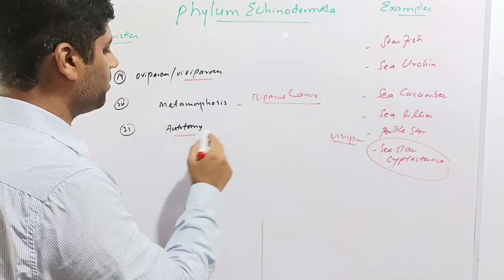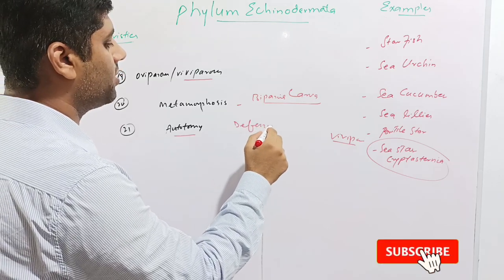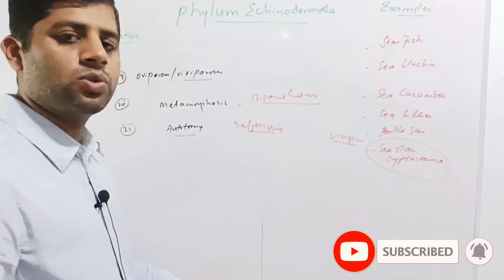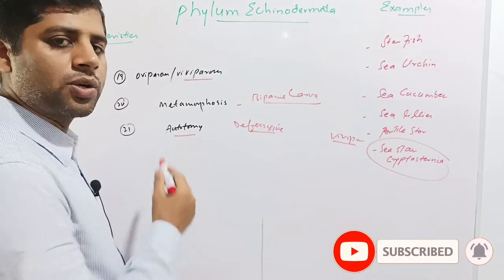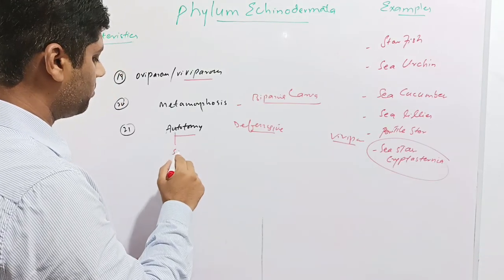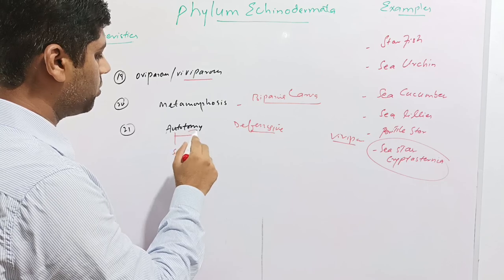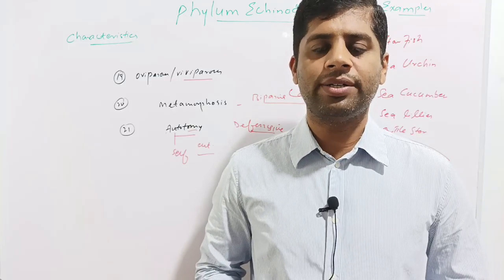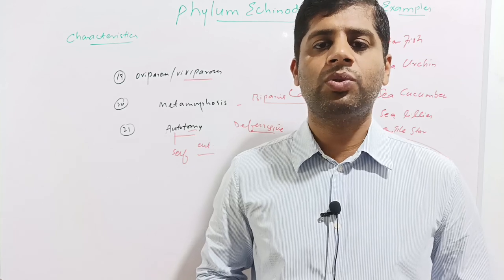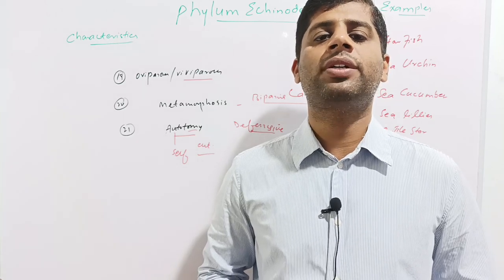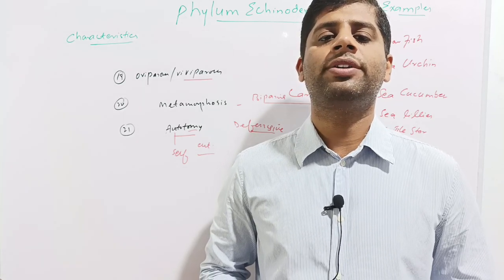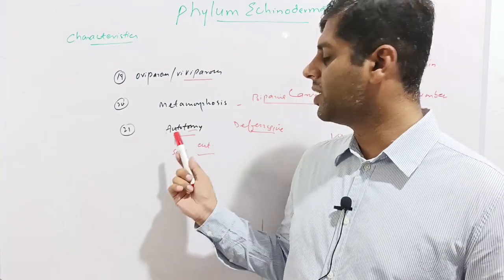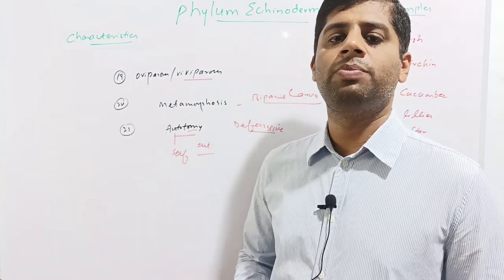Echinoderms also show a defensive behavior called autotomy — auto means self and tomy means to cut. When these animals are endangered, they shed away their arms to confuse the predator and escape, thereby safeguarding themselves.